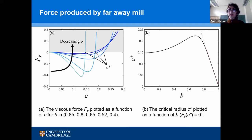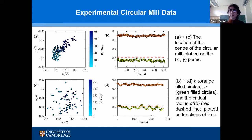We now have interesting theoretical predictions: b should be roughly constant, while the direction of drift of the circular mill should be a function of its radius c. To test these, in summer 2019 — the last summer before the pandemic — we went to Guernsey (essentially accessible from the UK on a British passport) and carried out a large number of experiments, taking many worms that formed a circular mill and tracking the centroid as a function of time.